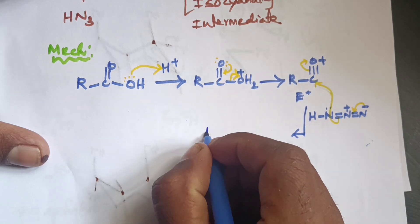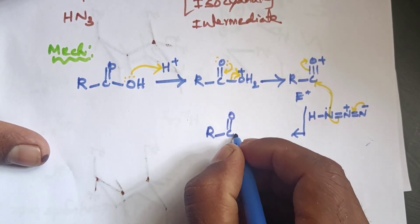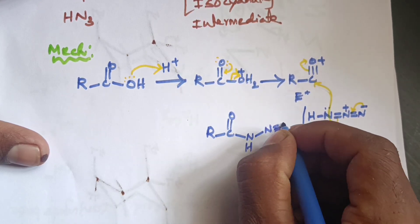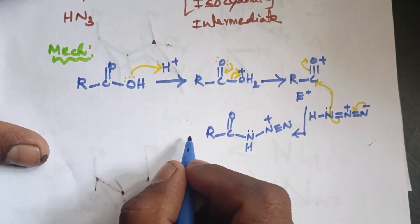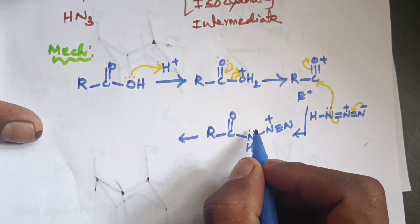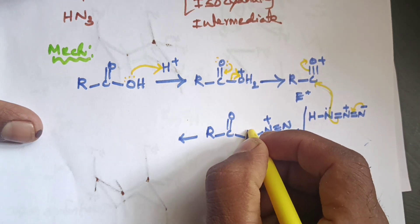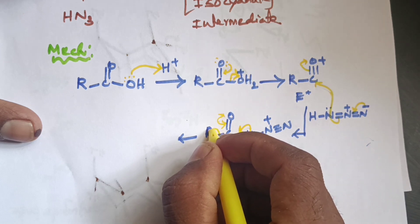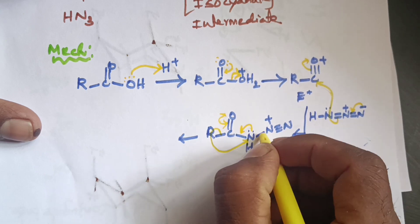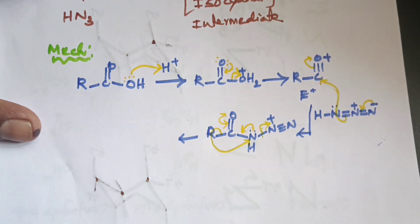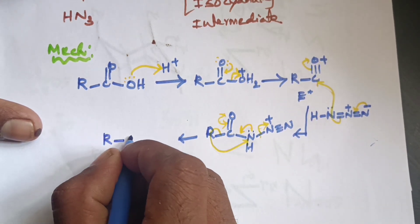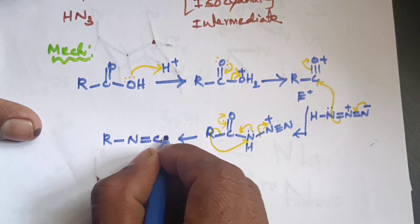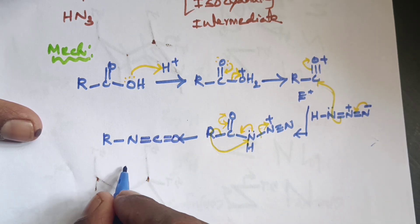This pi bond is shifted to neutralize the oxygen. The nitrogen migrates to attack the electrophilic carbon center. N2 gets eliminated and a double bond C=O forms — this is the isocyanate (R-N=C=O), the intermediate.